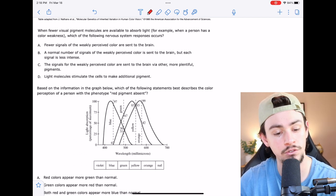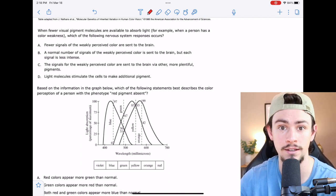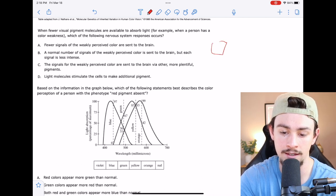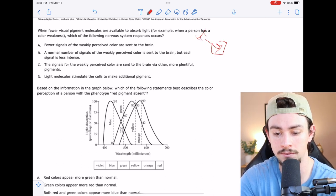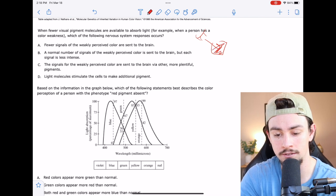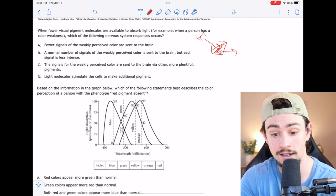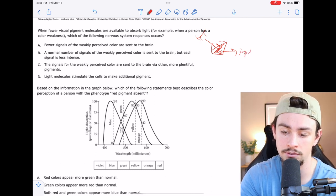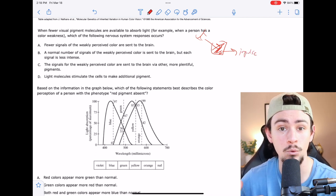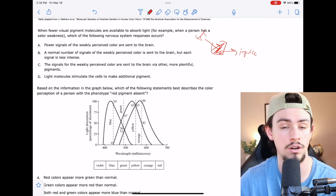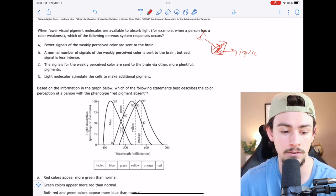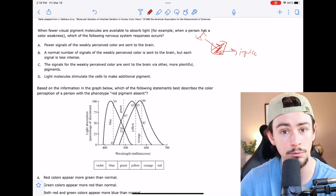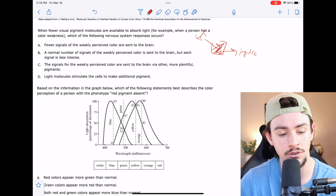A says fewer signals of the weakly perceived color are sent to the brain. We know that the way absorption works is that light hits the pigment and then the pigment sends a nerve impulse. But if it doesn't realize it's getting that wavelength very often, it's going to send fewer of these impulses. So I like answer choice A because the other pigments are not going to be able to detect that wavelength. So maybe to A.